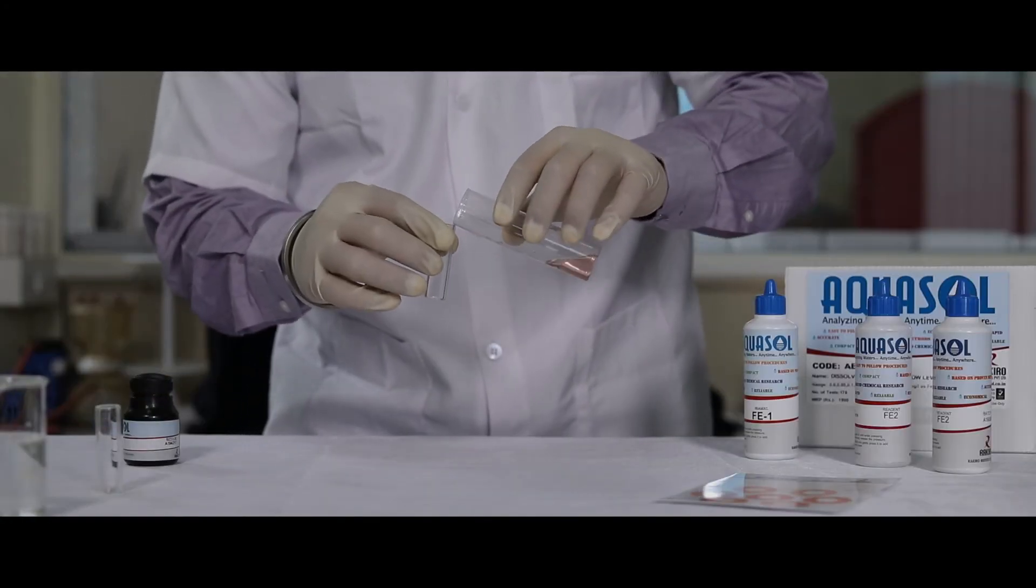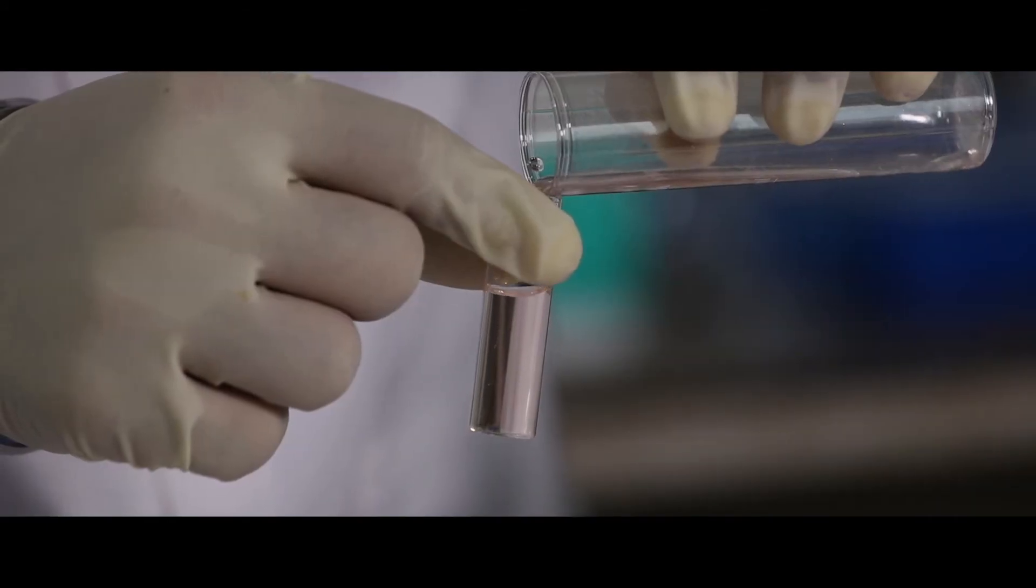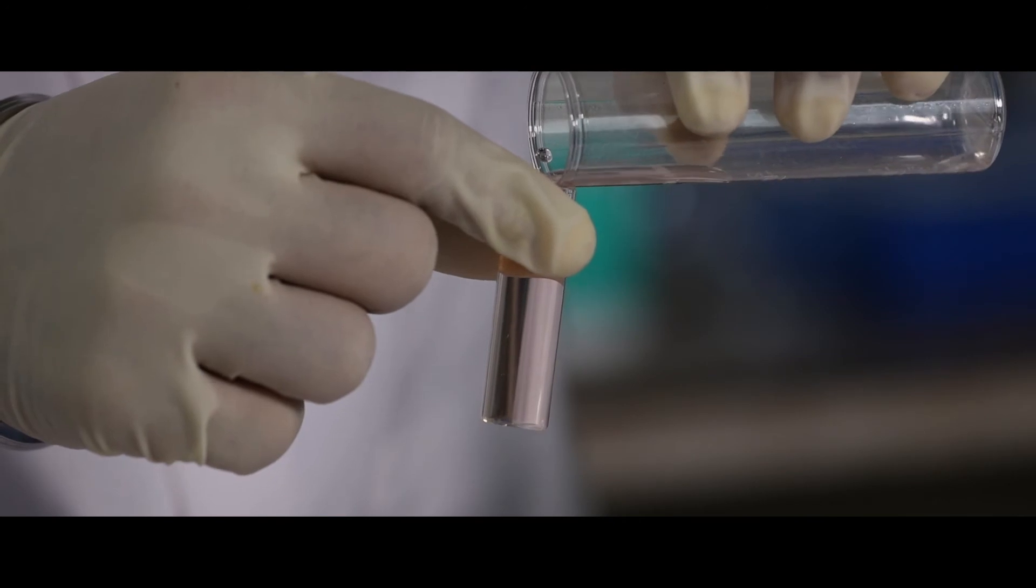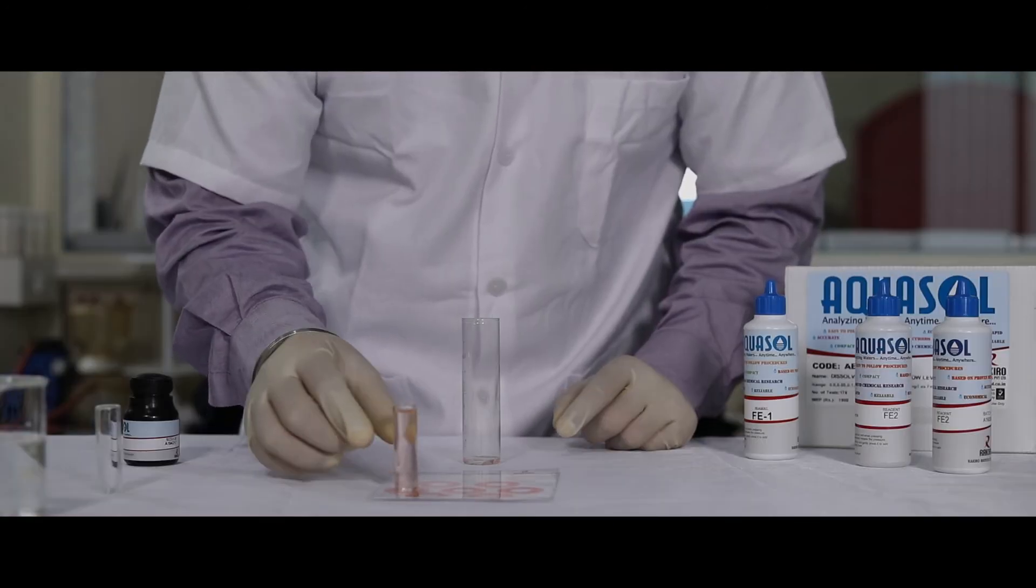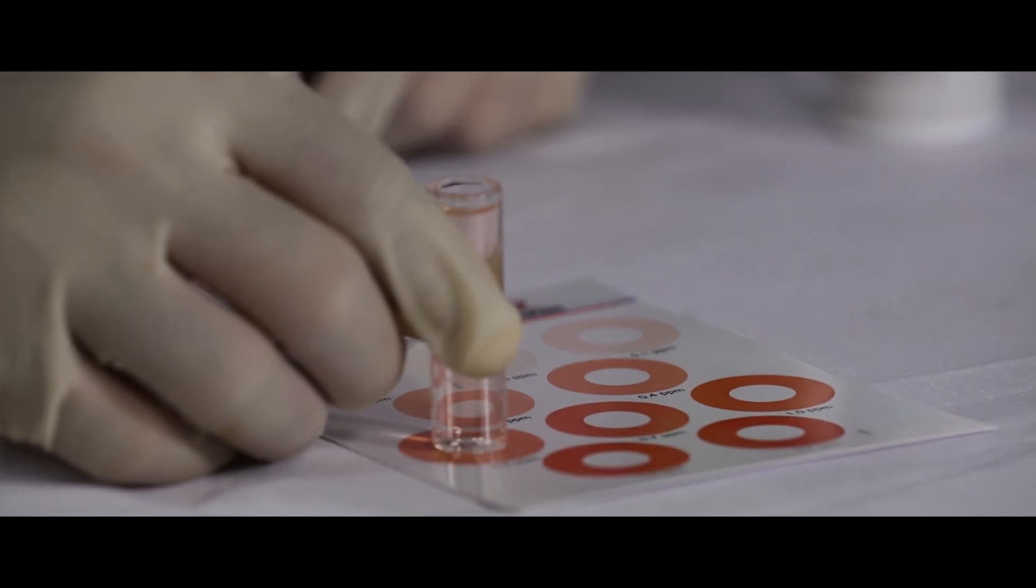Once the color is generated, transfer it to the comparator tube. Place the comparator tube on the white inner circles of the color chart to find the match for your color obtained.